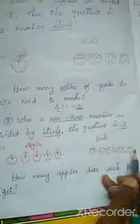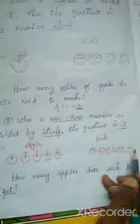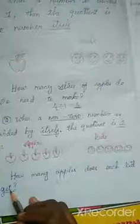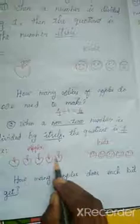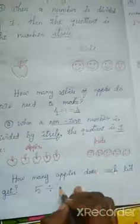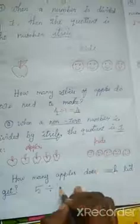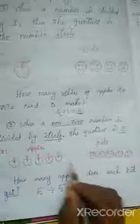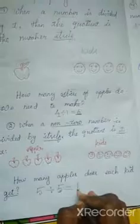The second property: when a non-zero number is divided by itself, the quotient is 1. Example: there are 5 apples and 5 kids. How many apples does each kid get? Each kid gets 1 apple. So 5 apples divided by 5 kids equals 1. The 5 is a non-zero number divided by itself, so the quotient is 1.